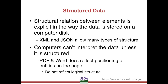All data has some type of structure associated with it, but structured data as we are examining here has a different connotation. Structured data refers to data where the structural relation between elements is explicit in the way that the data is stored on a computer disk. For instance, XML and JSON are common formats that allow many types of structure to be represented. These may not be the prettiest formats for a human to look at, but the structure is consistent, meaning the same types of values get recorded in the same place and in the same format, which is what machines need in order to interpret the data.